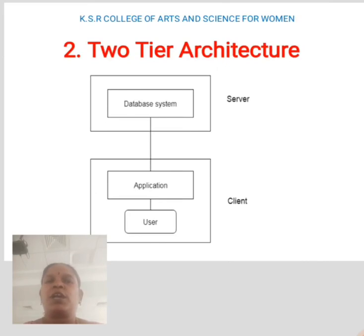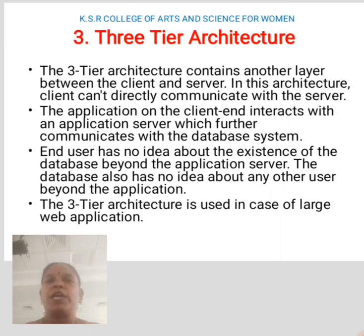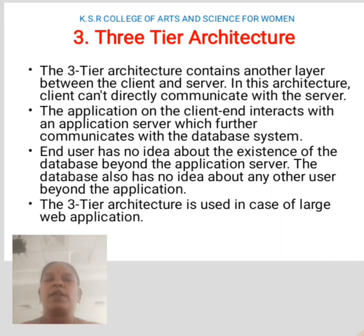Two-tier architecture diagram. Three-tier architecture: this architecture contains another layer between the client and server. In this architecture, the client cannot directly communicate with the server. The application on the client end interacts with the application server, which further communicates with the database system. The end user has no idea about the existence of the database beyond the application server. The database also has no idea about any other user beyond the application.